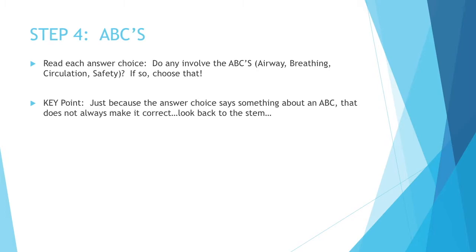Step four: ABCs. You probably know these as airway, breathing, circulation, but I've added an S — so airway, breathing, circulation, and safety. If any of those answer choices talk about any of those four things, there's a good chance that's the answer. Ask yourself what's going to kill your patient first — it sounds dramatic, but it's usually the answer. Key point: just because an answer choice mentions airway, breathing, circulation, or safety doesn't always make it correct. You have to look back to the stem. For example, if I'm asking about someone's bladder and one answer is 'place the patient on oxygen,' that's not going to fix the stem. It has to make sense.